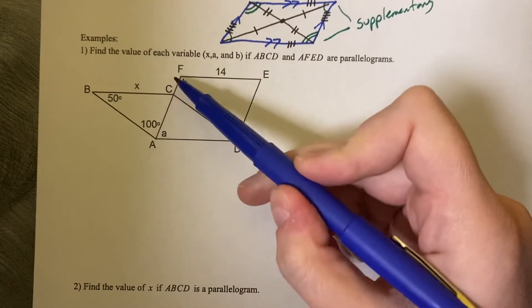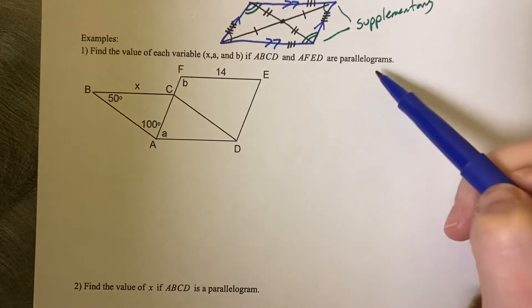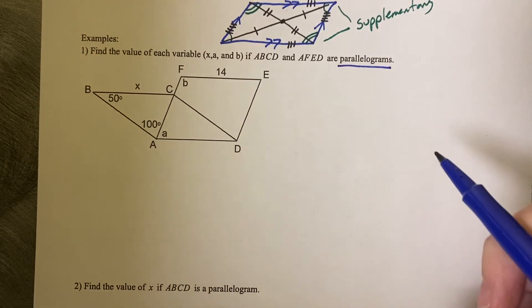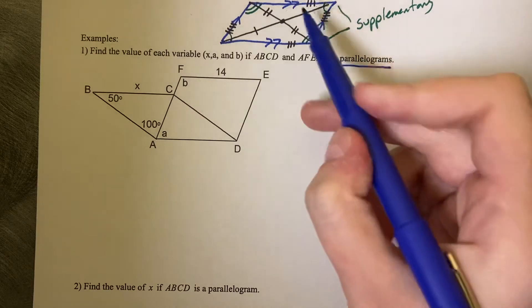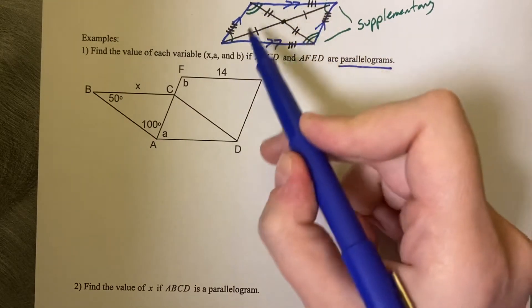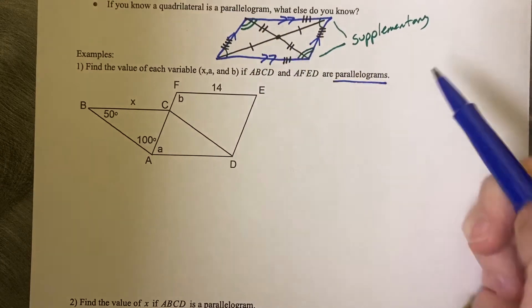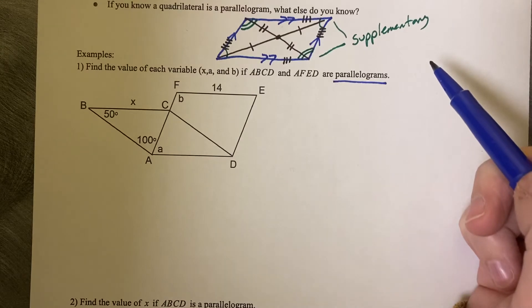And AFED, AFED, are parallelograms. So they're telling you that it's a parallelogram, which means it comes with all this information. Even if it's not labeled on the diagram, you still know all of this information.